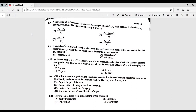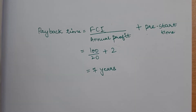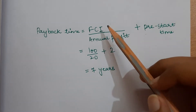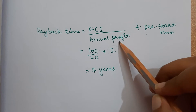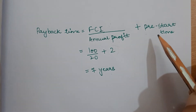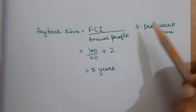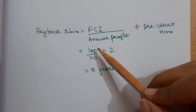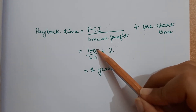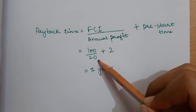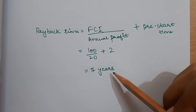Question 1.22: an investment of Rs 100 lakhs is made for plant construction, which takes 2 years to start production. Annual profit is Rs 20 lakhs. The payback time equals fixed capital investment divided by annual profit, plus the 2 years before production starts. Substituting the values, payback time equals 7 years.